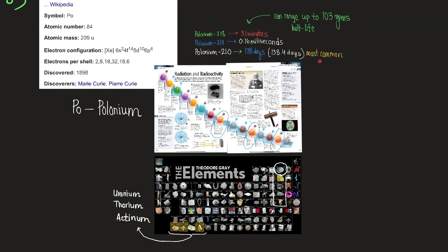It occurs in nature as a radioactive decay product of uranium, thorium, and actinium. The half-lives of its isotopes range from a fraction of a second up to 103 years. The most common natural isotope of polonium, polonium-210, has a half-life of 138.4 days.